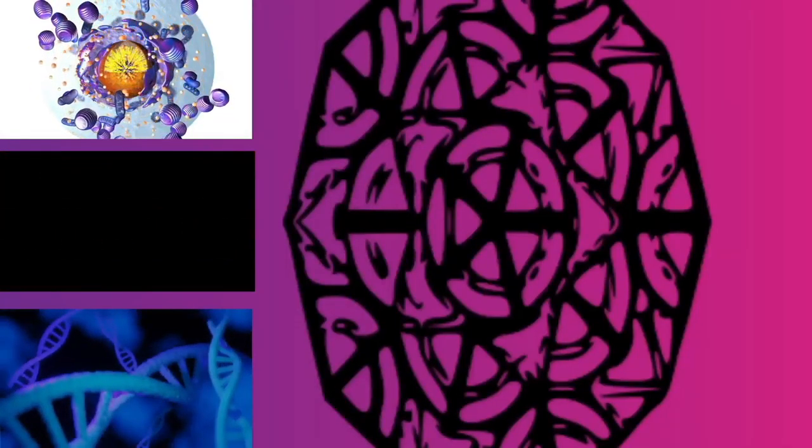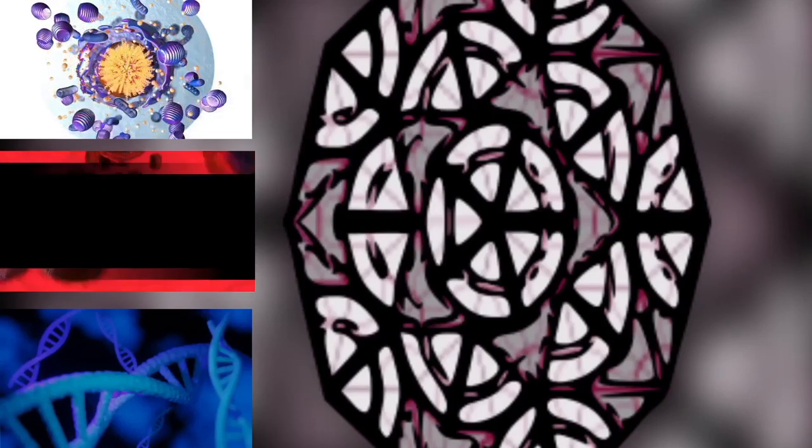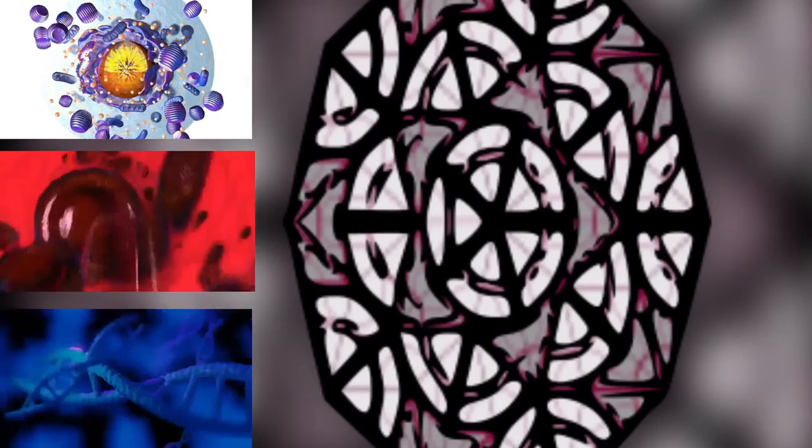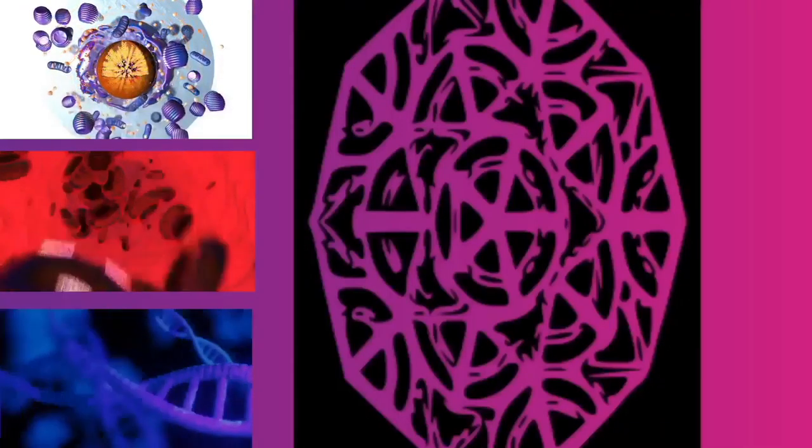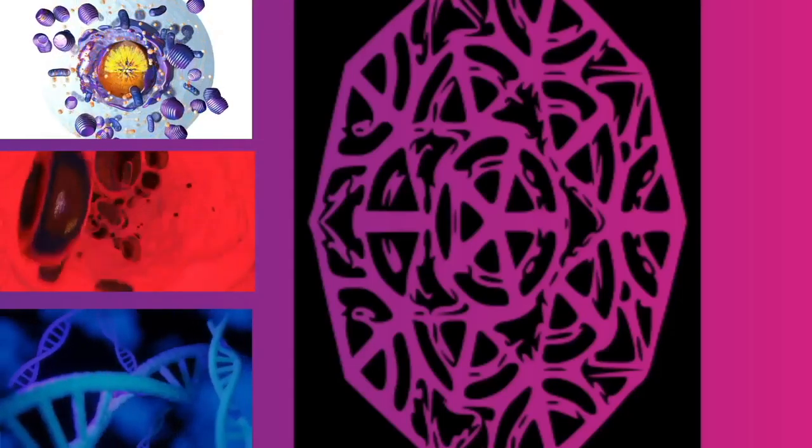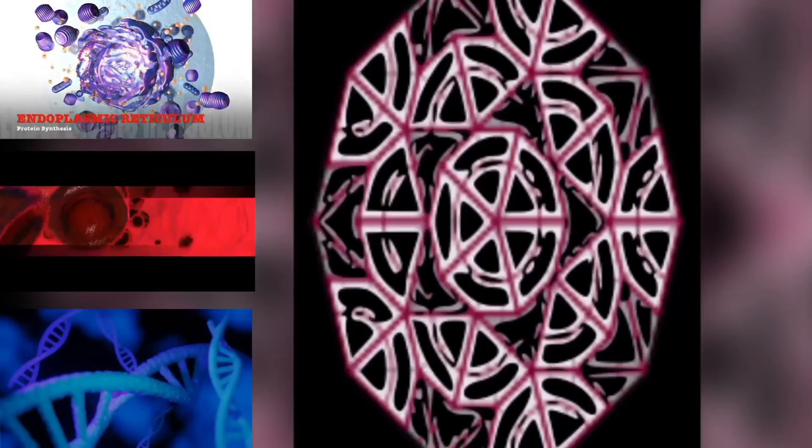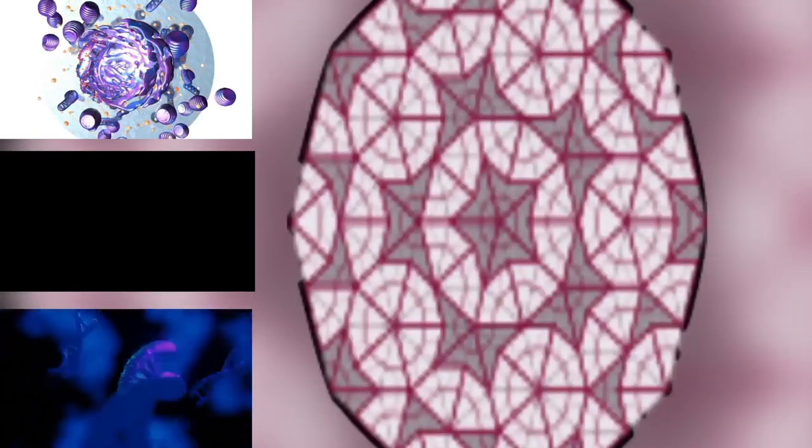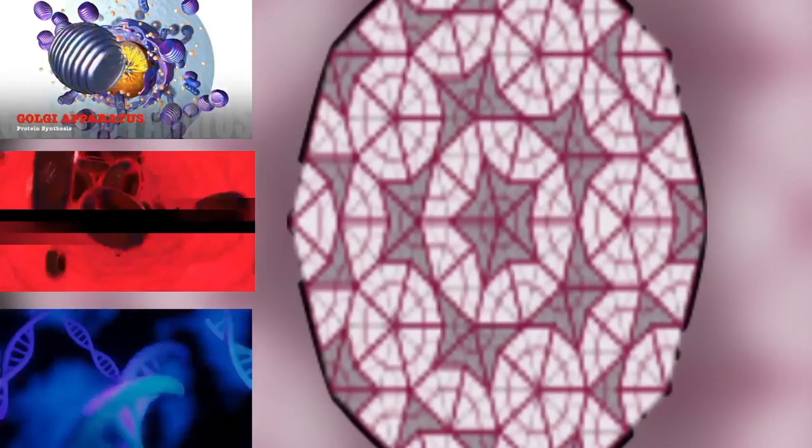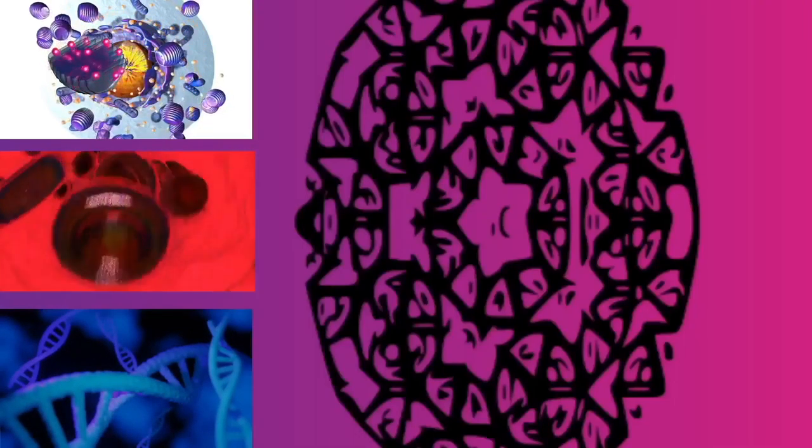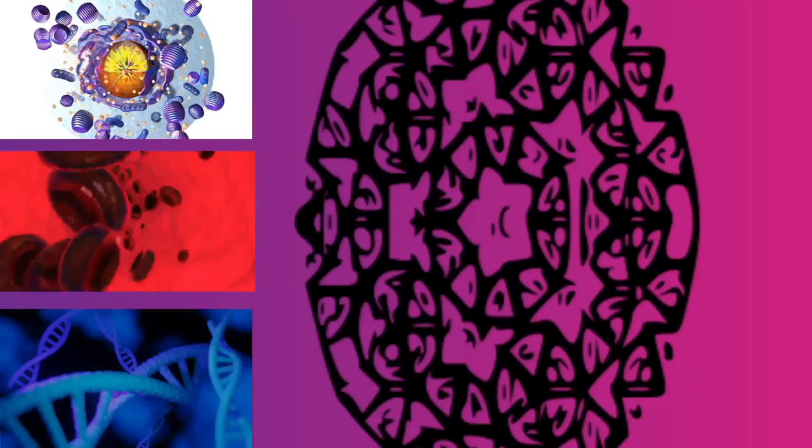Relationship to eukaryotes: The division between prokaryotes and eukaryotes is usually considered the most important distinction or difference among organisms. The distinction is that eukaryotic cells have a true nucleus containing their DNA, whereas prokaryotic cells do not have a nucleus.